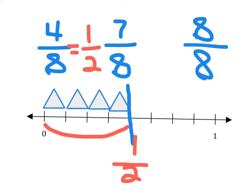So up here we can say that four out of eight is the same as one out of two. It's easy to see — how many fours do we have here? We have one of them. And how many fours do we have in eight? We have two of them — here's one four and here's two fours. One, two. It's a half.